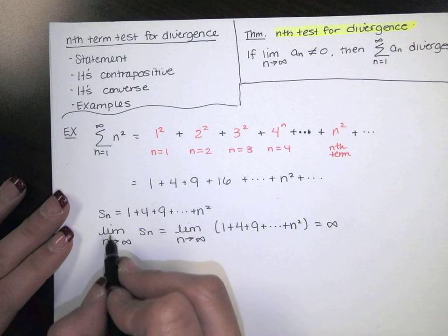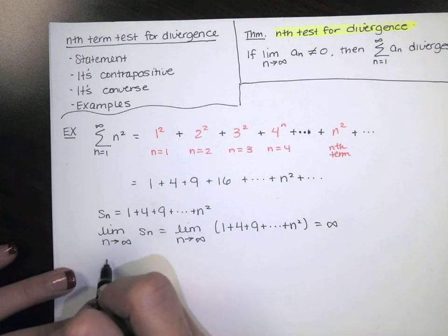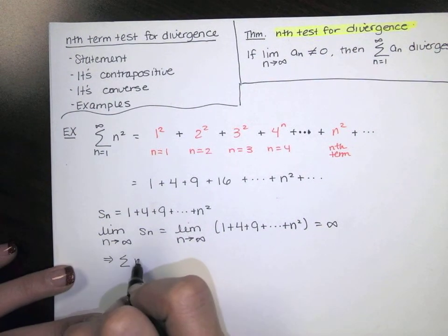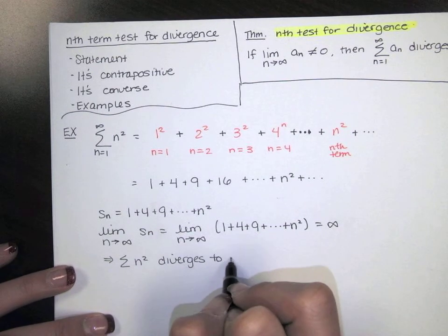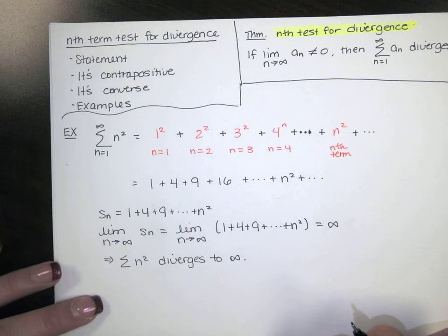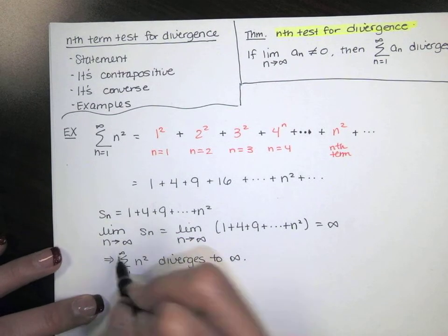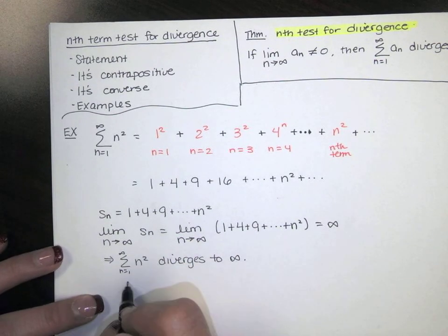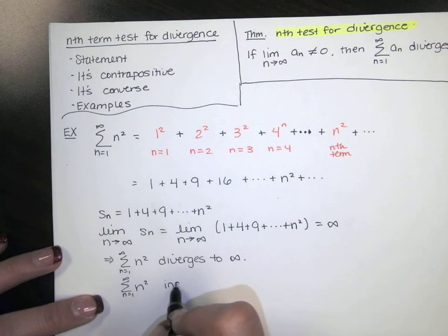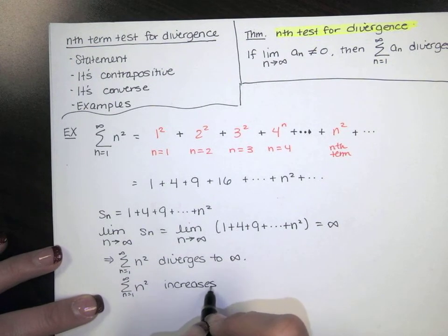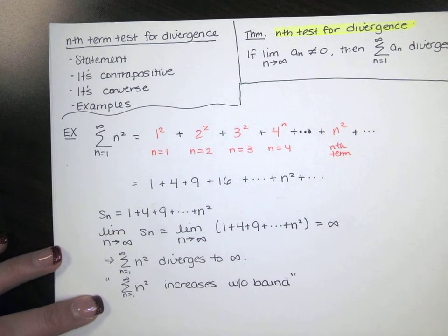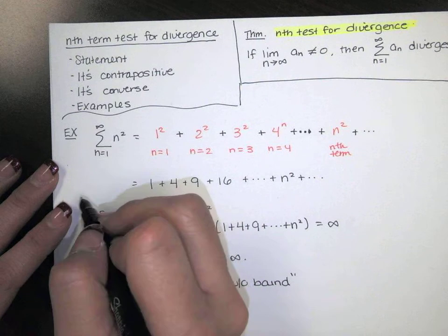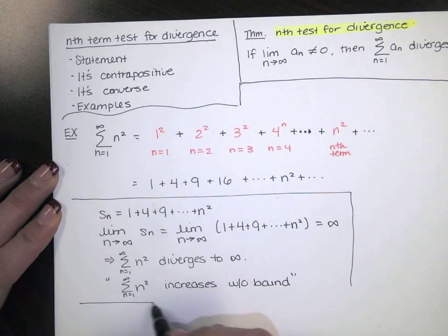By definition, it diverges to infinity because we're looking at the nth partial sum. Or we might say this series increases without bound. So that's one approach of showing that this series diverges.